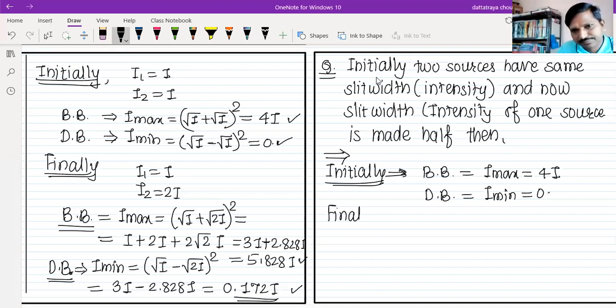Finally, while I1 is I, for example, I2 is I/2. The first source intensity I, second source intensity I/2.